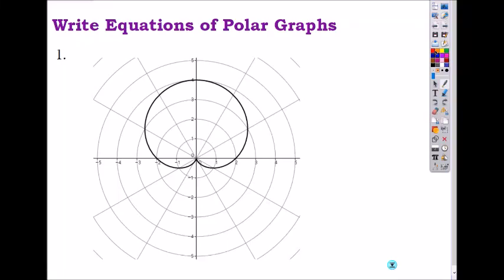So write equation of the polar graph. This one is what? Write the name of it. It is Limason Cardio. There are four types of Limason. This is Cardio, right? Because it hits, it's not just simple.